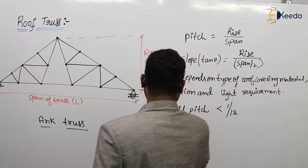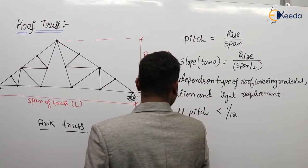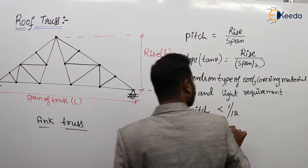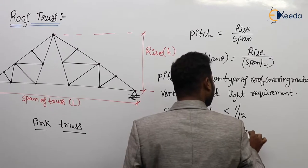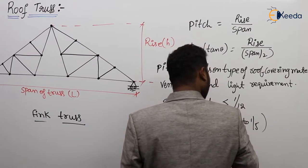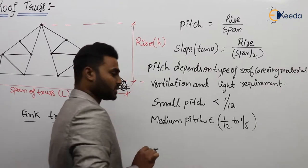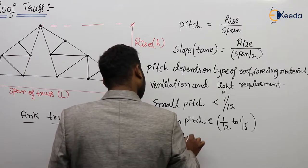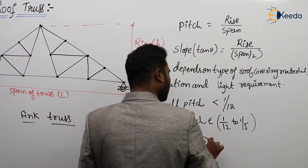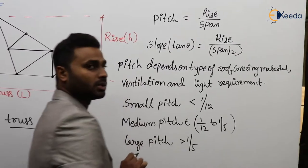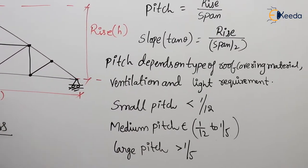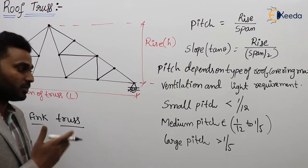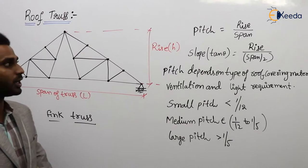Next, medium Pitch: if the Pitch value lies between 1/12 and 1/5, then it is known as medium Pitch. And if the Pitch value is greater than 1/5, then it is large Pitch. So these are the classifications of Pitch: less than 1/12 is small, 1/12 to 1/5 is medium, and greater than 1/5 is large.